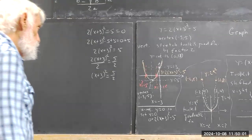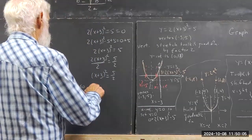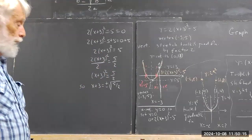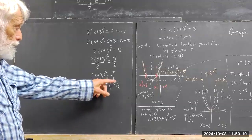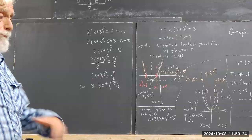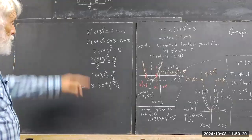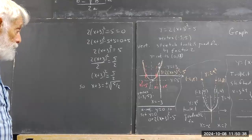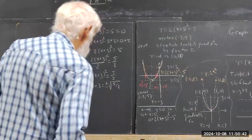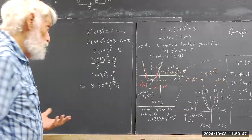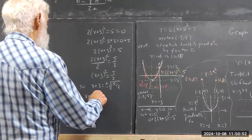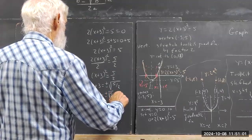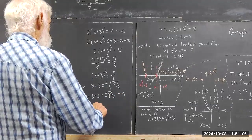Now what do we do next? We take the square root of both sides. If (x plus 3) squared equals 5 halves, then x plus 3 could be the square root of 5 halves or negative square root of 5 halves. We have to get rid of that 3, but now we can: subtract 3 from both sides and we get x equals negative 3 plus or minus the square root of 5 halves. That's four steps.